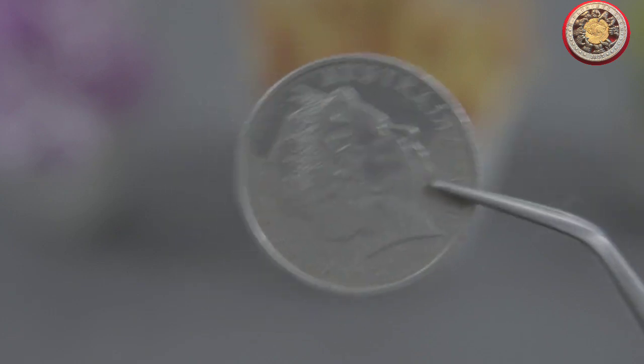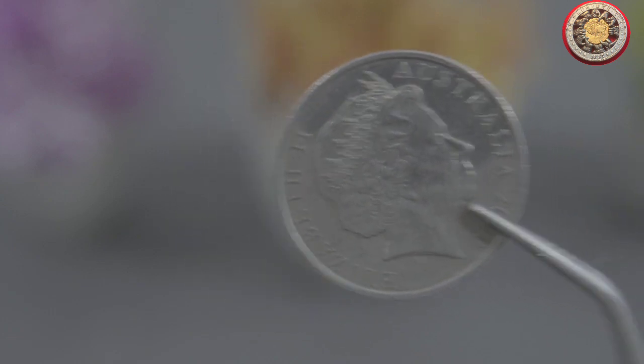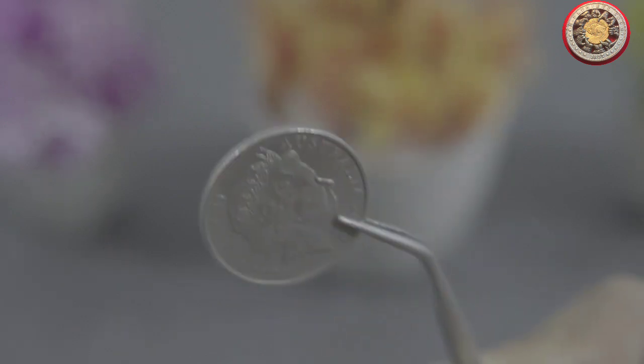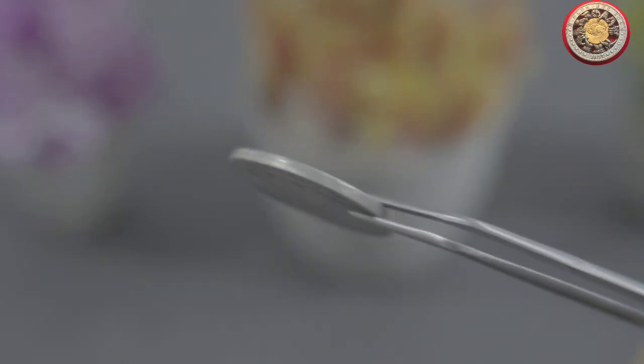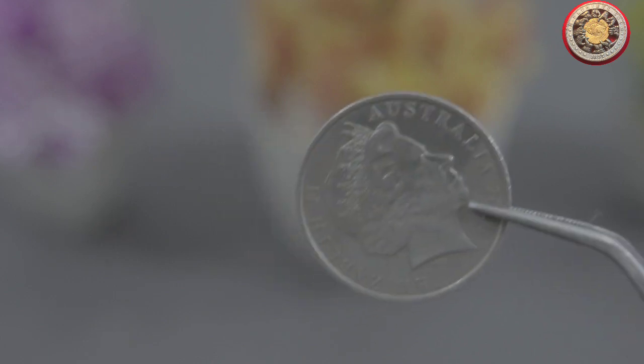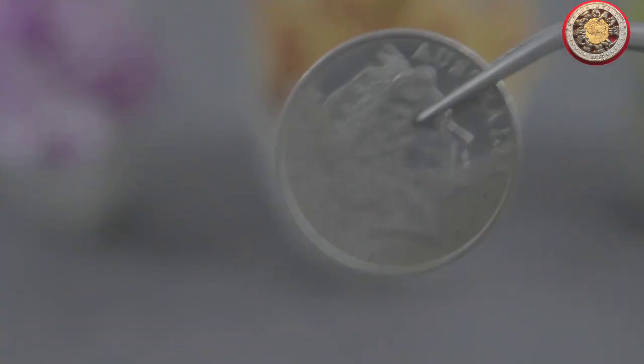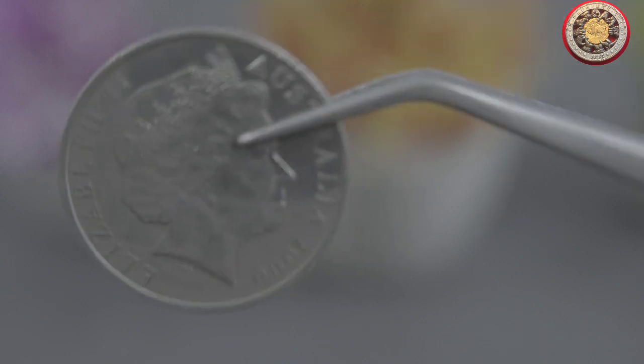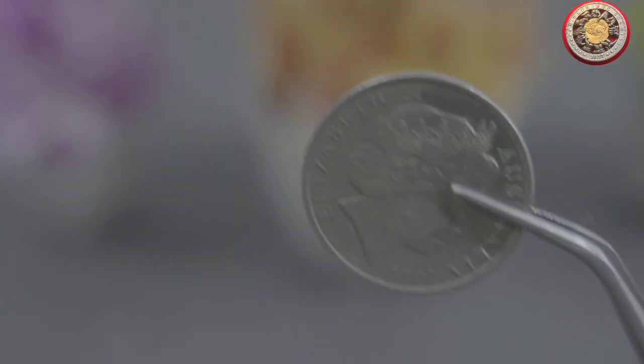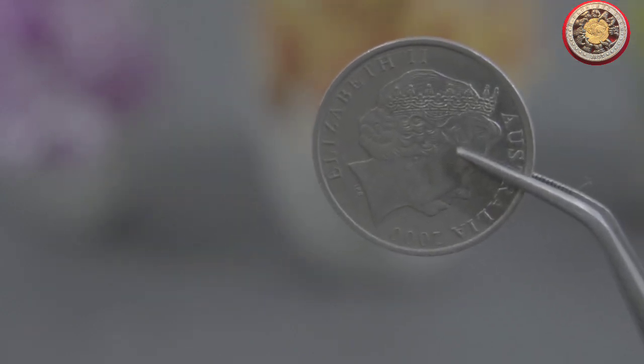The Tencent 2000 coin was introduced in Australia in the year 2000. It is a silver colored coin with a distinctive shape and design. The front of the coin features the image of Queen Elizabeth II, who was the reigning monarch at the time. The back of the coin features a stylized image of the Australian coat of arms, with a kangaroo and an emu standing on either side of a shield.